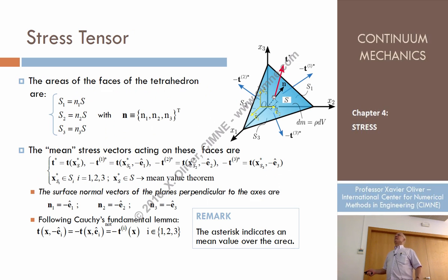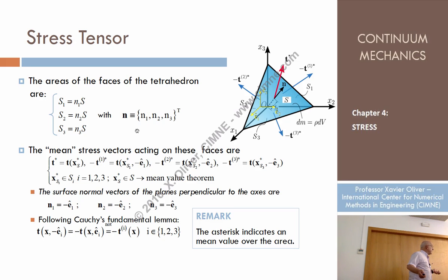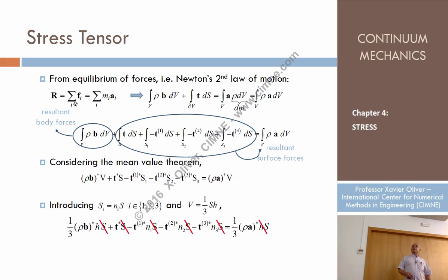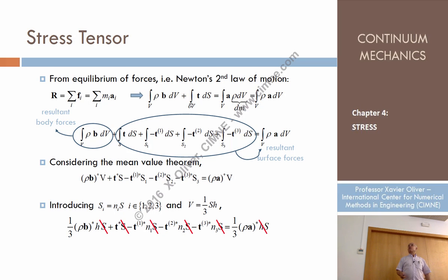Now let's apply Newton's second law to this body. The sum of forces equals mass times acceleration. The sum of forces is the integral of body forces plus the integral of boundary forces, equal to the integral of rho times acceleration over the volume. This must be fulfilled for any volume — in particular, for this tetrahedron whose apex is the particle O being studied.